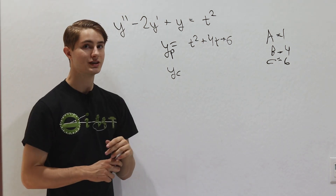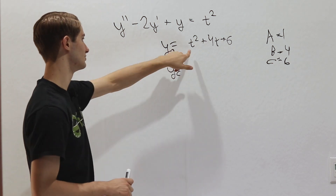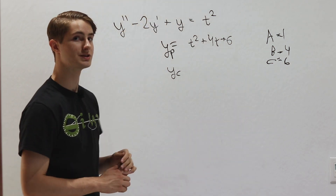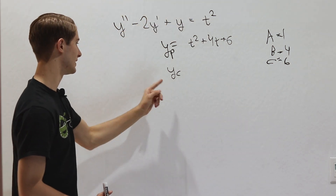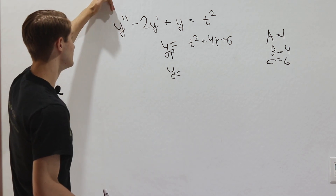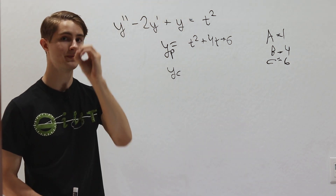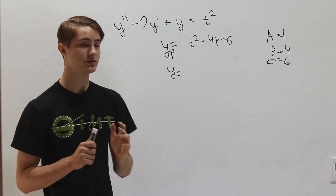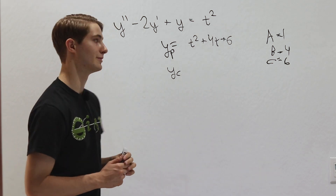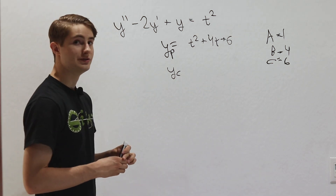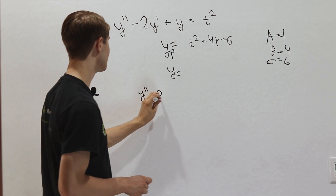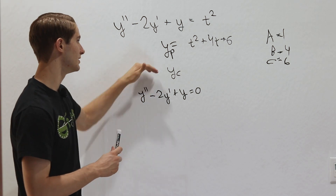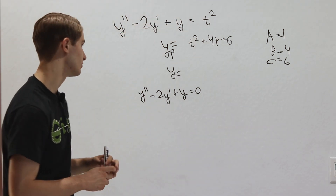We also need a complementary solution. The particular solution t squared plus 4t plus 6 gives us t squared. If we add a complementary solution y_c that plugs into all the derivatives and sums to 0, then t squared plus 0 is still t squared — giving the same result but now with arbitrary constants. To find it, we solve y double prime minus 2y prime plus y equals 0.